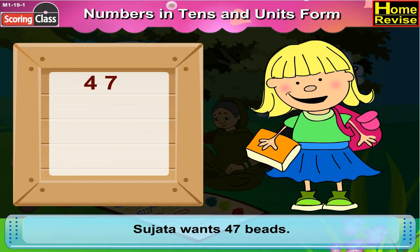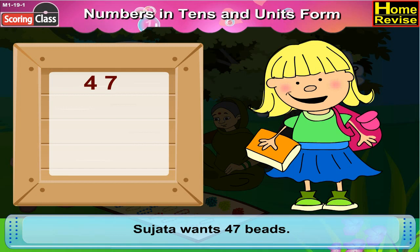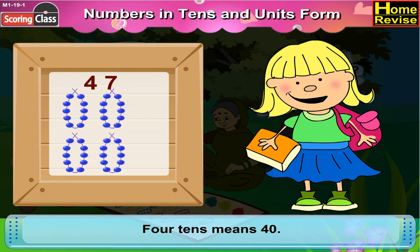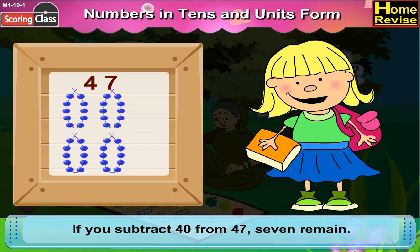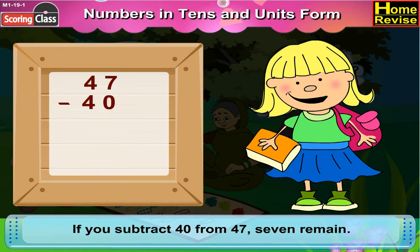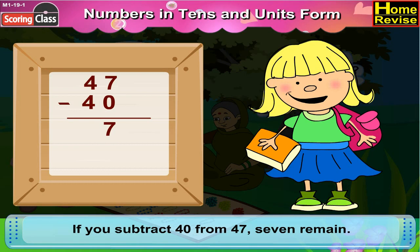Jata wants 47 beads. You very well know that 4 tenths means 40. If you subtract 40 from 47, 7 remains — that is, 7 single beads. So, Sita would give her 4 strings of 10 beads and 7 single beads.